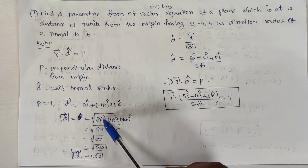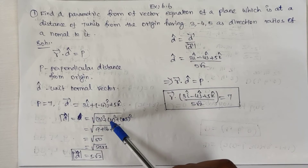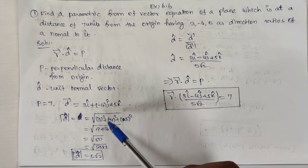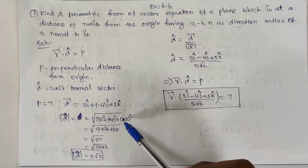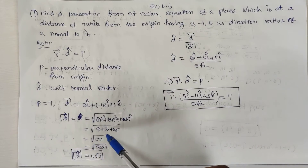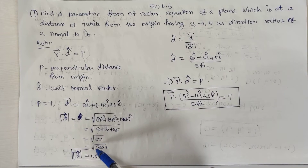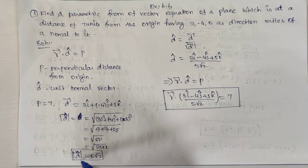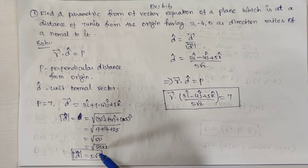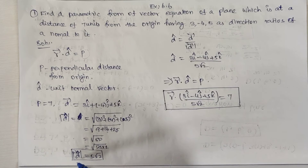Now, the modulus of d⃗ is equal to √(3² + (-4)² + 5²) = √(9 + 16 + 25) = √50. We can split √50 as √(25 × 2), so the modulus of d⃗ is equal to 5√2.